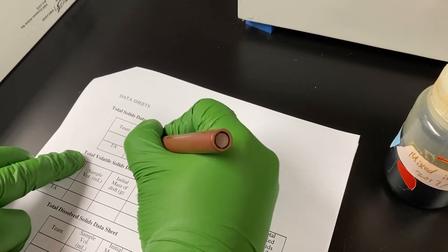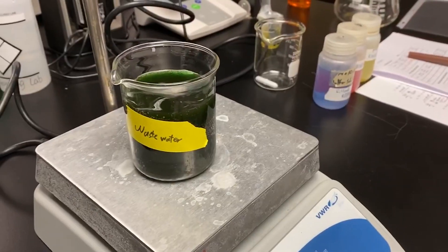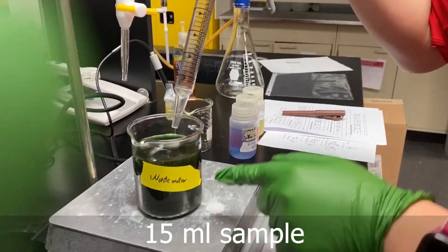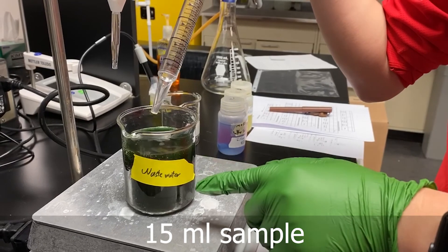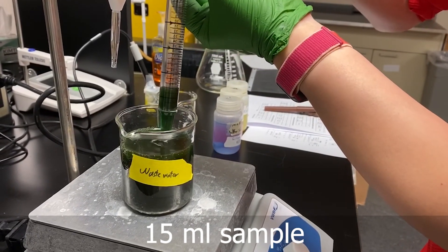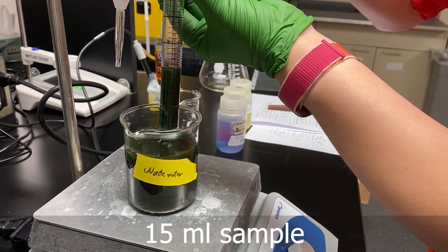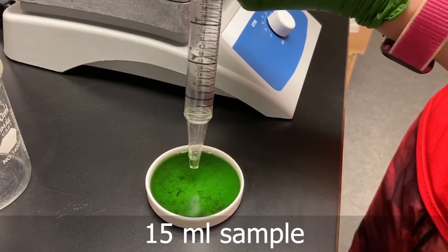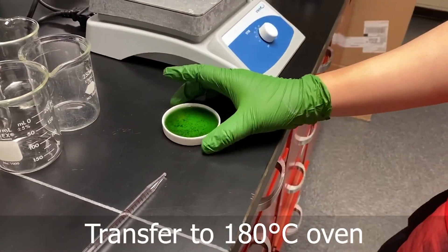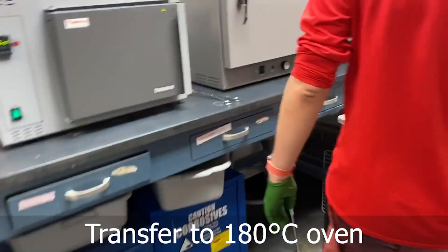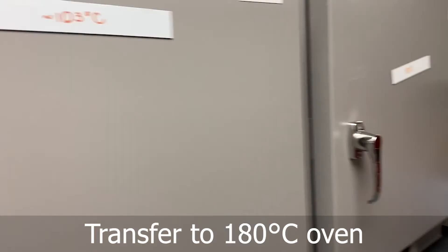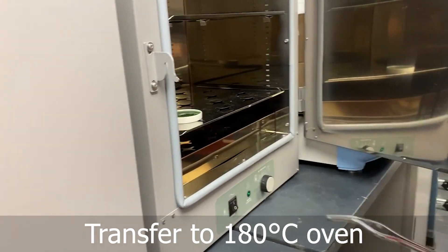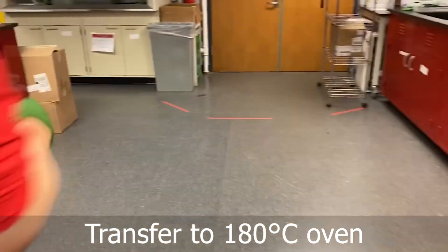And then we are going to take 15 ml of the sample. We need to take 15 ml of the wastewater sample into the dish. Before we take the sample, we need to ensure the sample is mixed. And then we transfer this to 180 degree oven. Then we use the tweezers to put it into the oven and wait for 45 minutes.